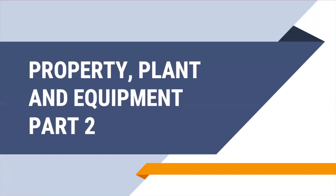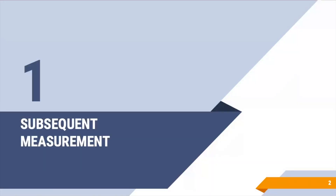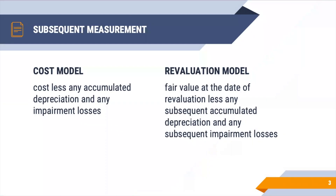This is Part 2 of accounting for property, plant, and equipment. In this video, we will focus on the subsequent measurement of PPE items. So how do we subsequently measure property, plant, and equipment? As I mentioned in the last video, for subsequent measurement, you have two models to use — either the cost model or the revaluation model.